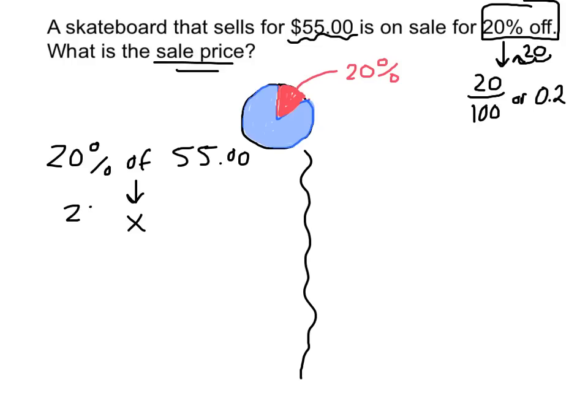So I have two choices. 20 over 100 times 55. So it would be 20 times 55 divided by 100. If I multiply across, that would give me my percent off. And I could use that to find the new sale price. Or 20% is 0.2. And I could do 0.2 times 55 to find the amount of the discount. And that's going to be easier to do on paper.